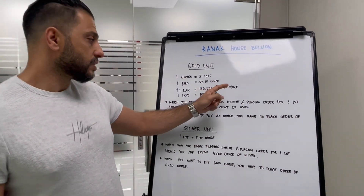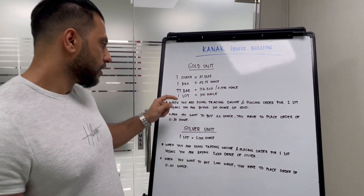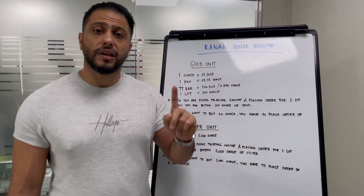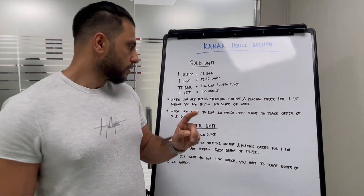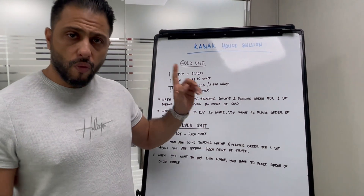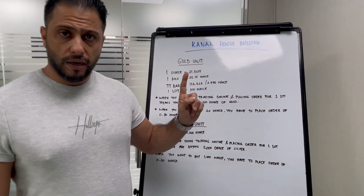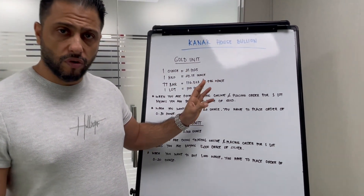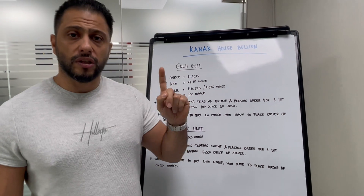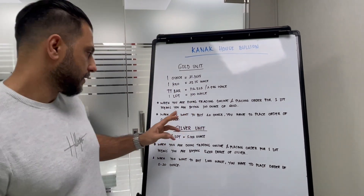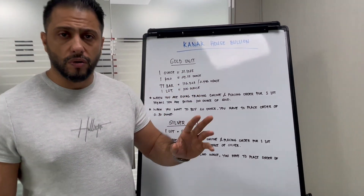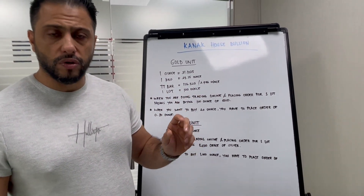One lot in trading means 100 ounces. So when you are placing an order of one lot in gold trading, you are placing an order for 100 ounces. For example, if you want to buy 20 ounces of gold,